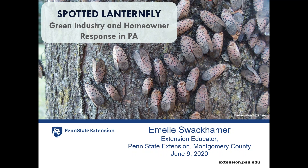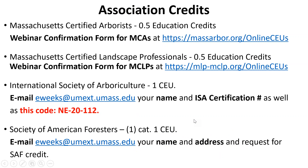Thank you so much, Emily — excellent presentation. We'll now go through the credit process. For association credits, Mass Certified Arborists can receive a half credit by filling out the webinar confirmation form at the website shown on screen. The same process applies for Massachusetts Certified Landscape Professionals — please fill out the webinar confirmation form at your respective website.